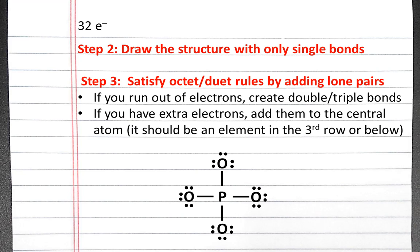So first, satisfying the octet rule for the oxygen atoms, we'll want to add six additional electrons to each oxygen atom. If we count up the number of electrons that we've used, we see that we've used all 32 of our valence electrons.